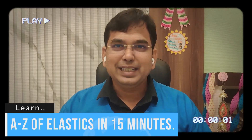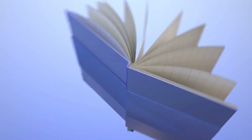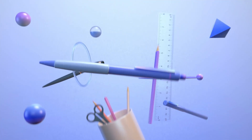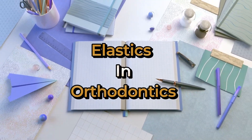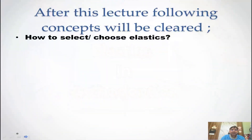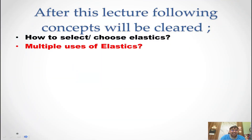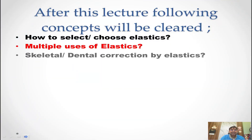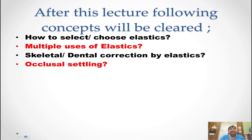Elastics is a very confusing topic in orthodontics because many doctors don't know how to change the direction of the elastics and how to use it effectively for correction of class 1, class 2, class 3, or midline discrepancy, or use it as a reciprocal angle. We have tried to summarize everything in this 15 minutes. We will understand multiple things like how to choose elastics, which elastics, and what are the multiple uses of elastics for skeletal and dental correction.